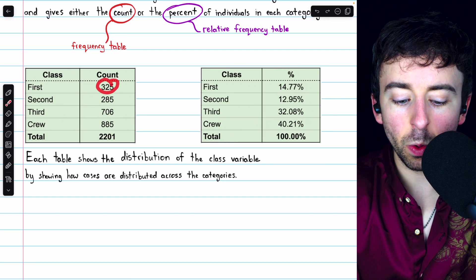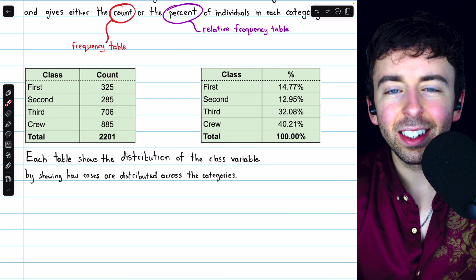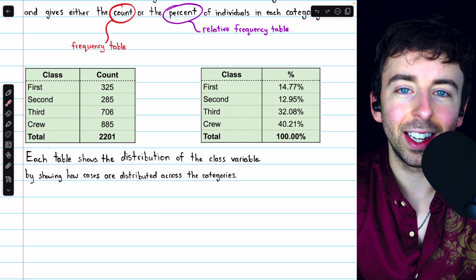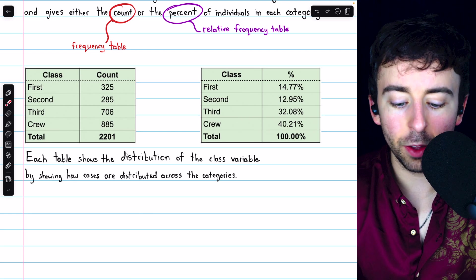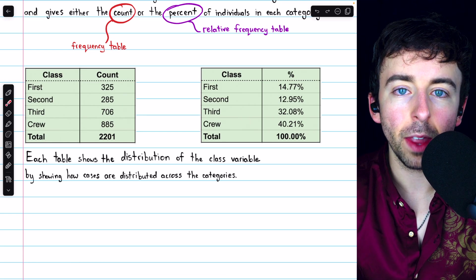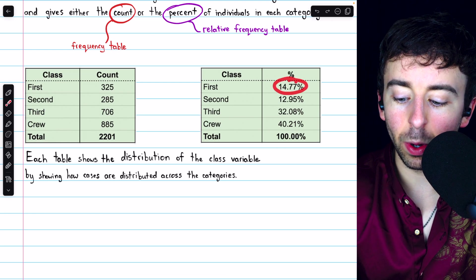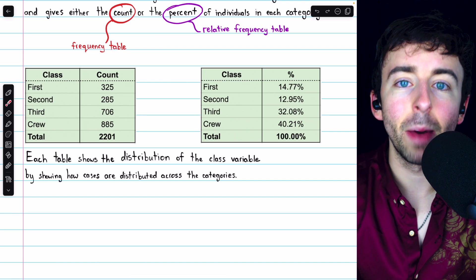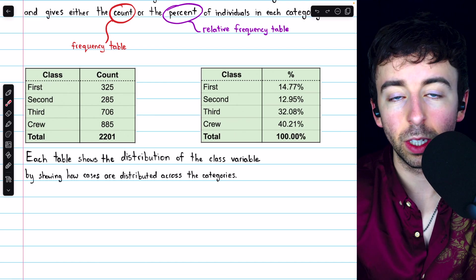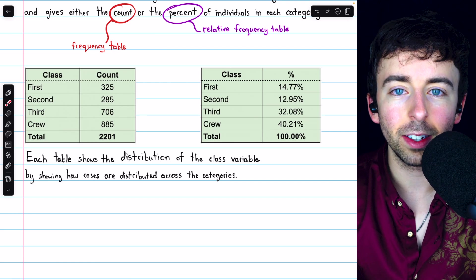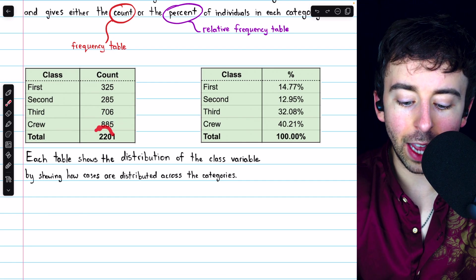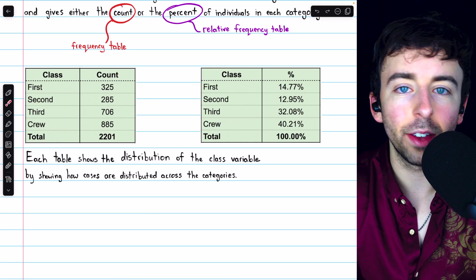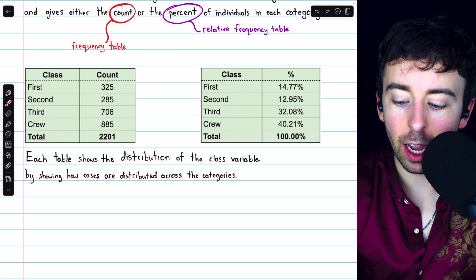At a glance, 325 people in first class doesn't tell us that much. We have no idea how big of a part of the whole that is, and we can only compare it to other categories by comparing those raw numbers. But as a percent, 14.77%, we can immediately look at that and recognize that it's certainly a minority of the total, since the total would be 100%.